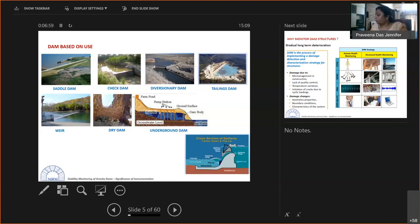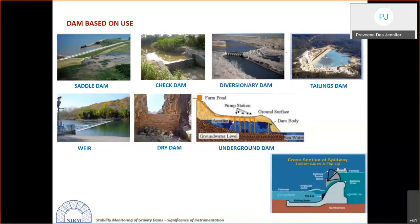Weir dams divert a river channel to create a lake environment for water abstraction. Underground dams arrest excess water through an aquifer and store it within rock masses; a diversionary underground dam structure diverts all or part of a river's flow and traps groundwater, which can then be utilized from within rock masses.